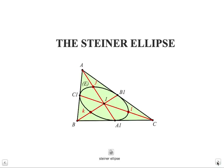Among the ellipse tangent to the three sides of the triangle is the Steiner ellipse, which is the ellipse passing through the midpoints of the sides of the triangle.